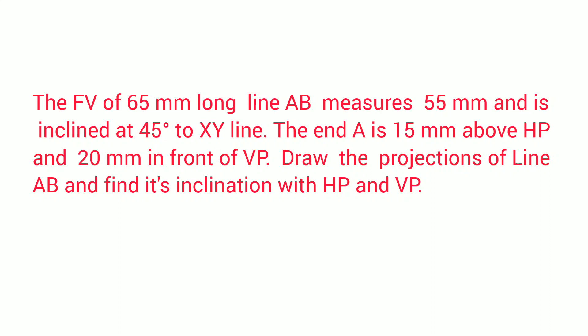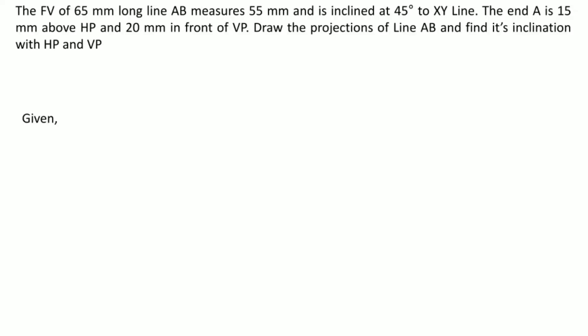Very first of all, we will try to get the data in terms of our notations. So the FV of the line 65 mm long - it means we have been given the true length of the line, that is 65 mm. So we will mark A'B₁' and AB₂ as 65 mm.